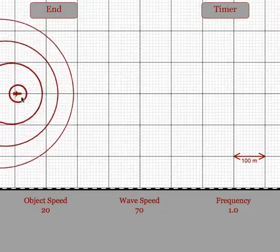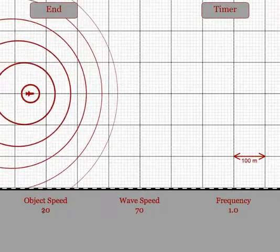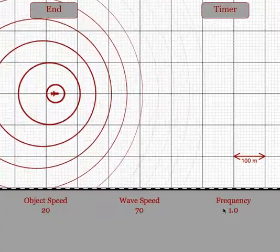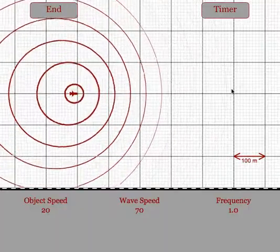The plane will fly through your space at the object speed, and the waves will move at the wave speed and be produced with the frequency indicated.